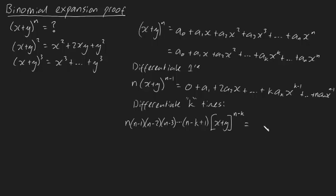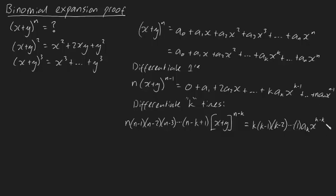On the right hand side, everything up to the a_k term is going to turn into zero when we differentiate k times. For the a_k x^k term, differentiating k times gives k times k minus one times k minus two, continuing all the way down to one, times a_k times x to the k minus k. There are additional terms, but I won't evaluate them — you'll see why shortly.